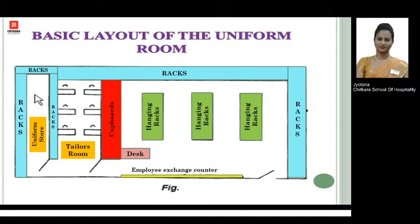In this slide you can see a basic layout of the hotel uniform room. As you can see on the cursor here, we have an entry and an exit door. Generally we have one entry and one exit door for security reasons. The blue color marks are racks or shelves to store the uniforms. In between, you can see some hanging racks, as some parts of the uniform are well maintained when hanged on a hanger.